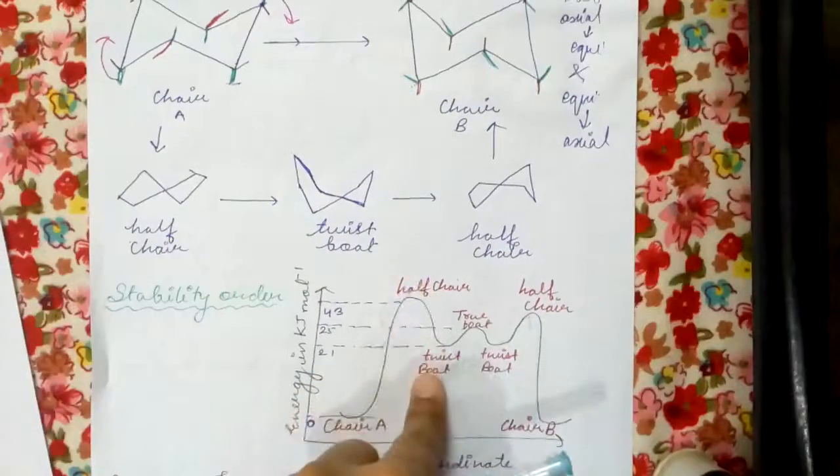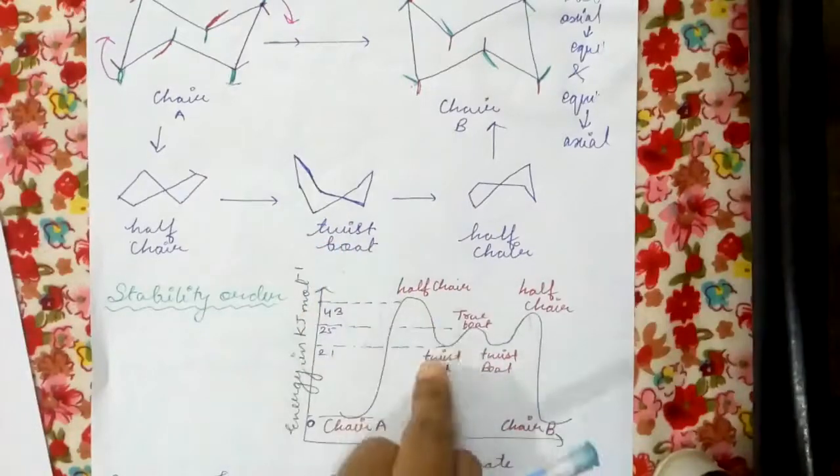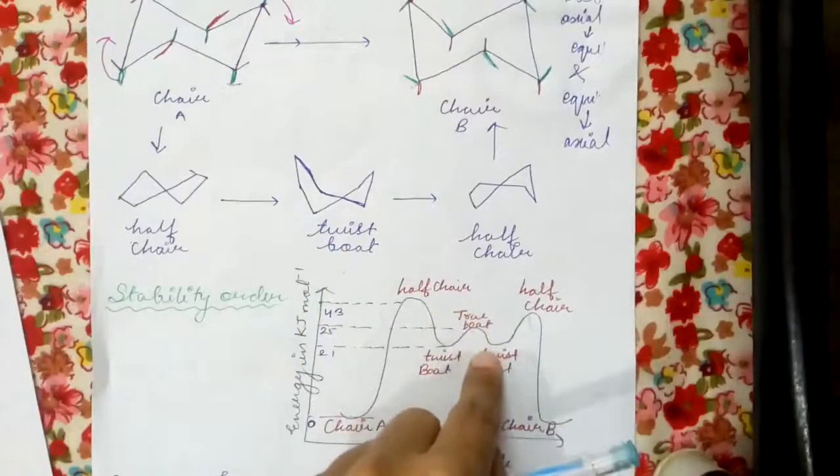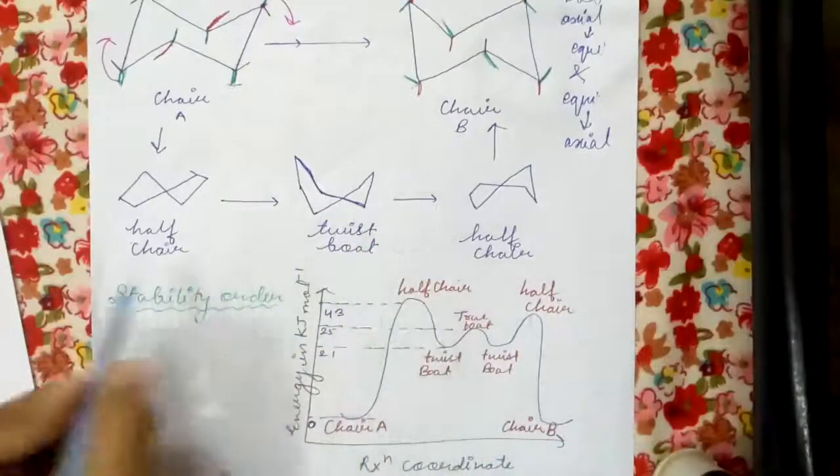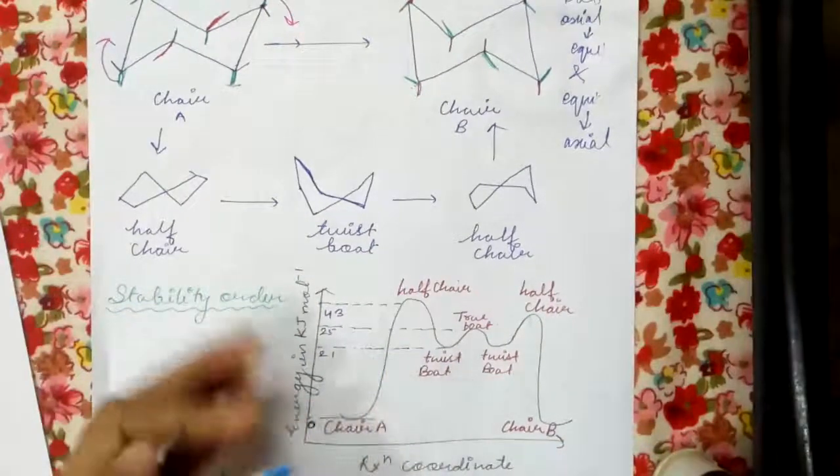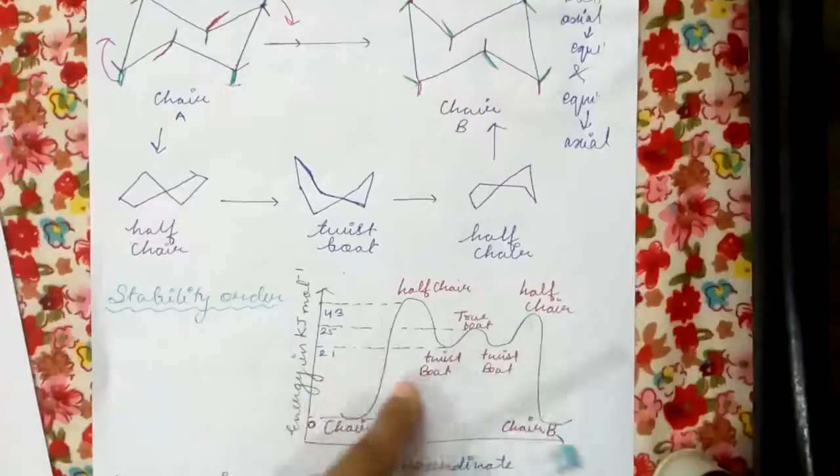And then it changes to twist boat. See this - then twist boat to true boat, true boat to twist boat again, and then finally chair B. So what happens is when we plot this graph we see that after chair conformation, the next stable structure is twist boat form.